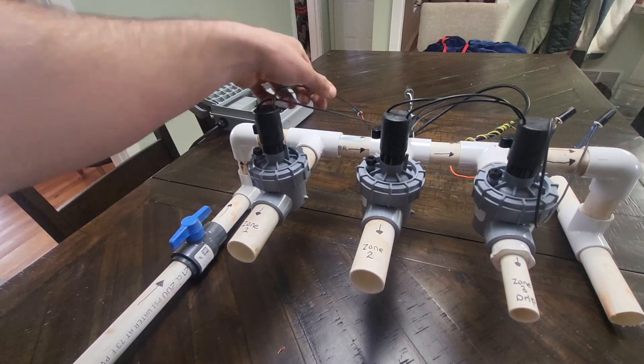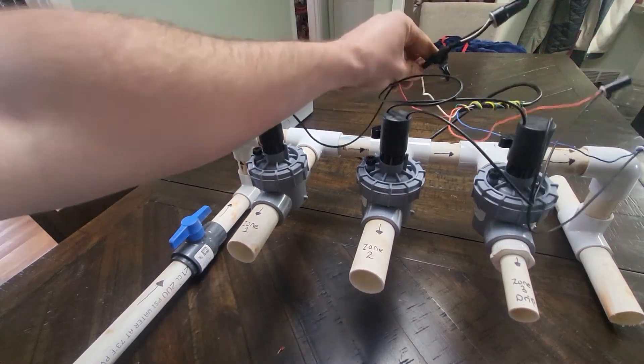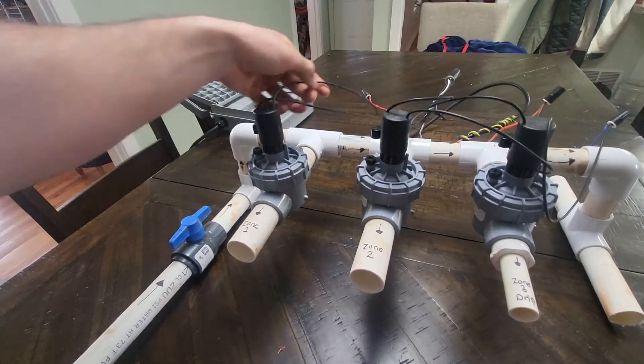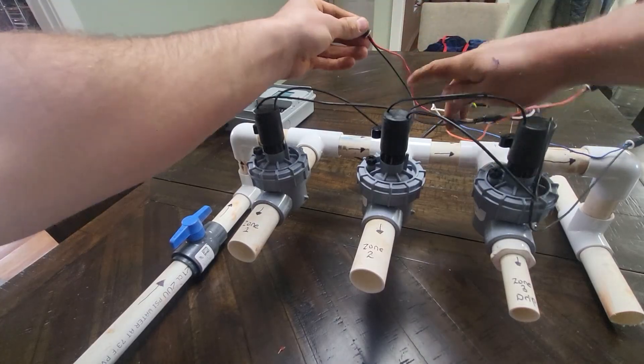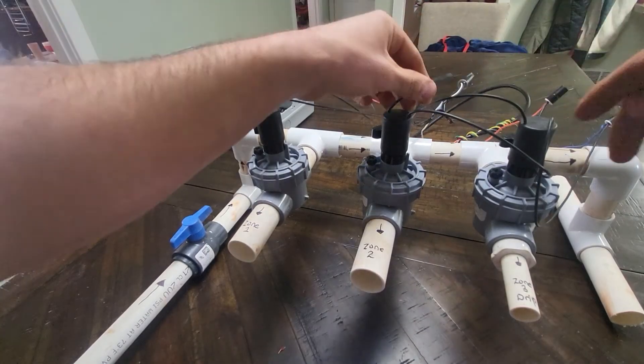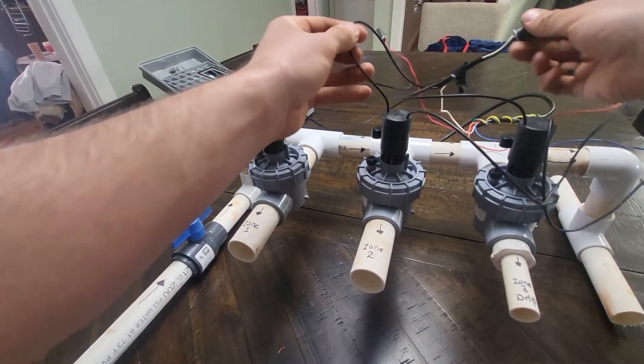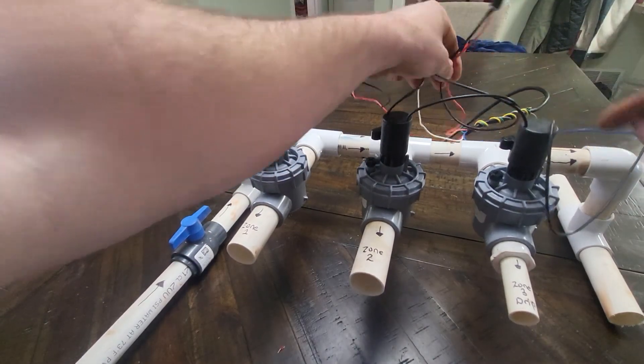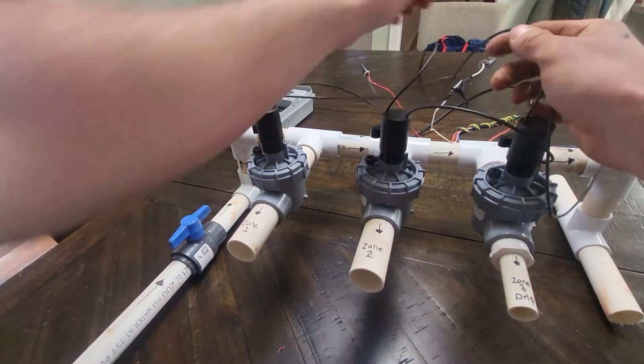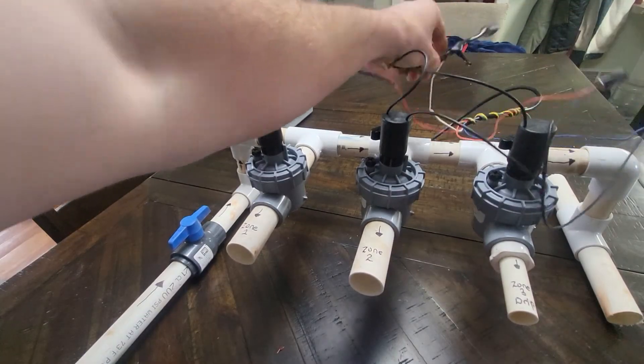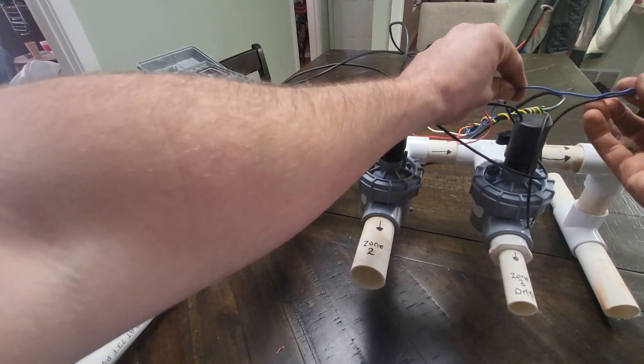Zone one is connected to the common and the red field wire. Zone two is connected to the common and the orange field wire. Zone three, which is drip, is connected to the common and the blue field wire.